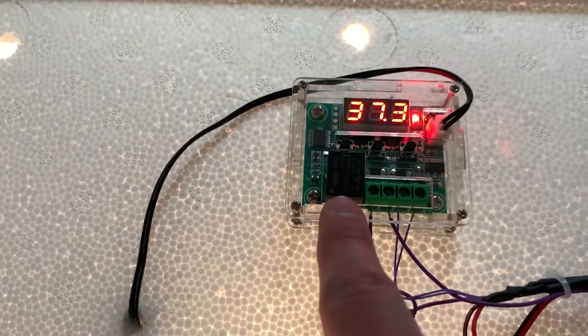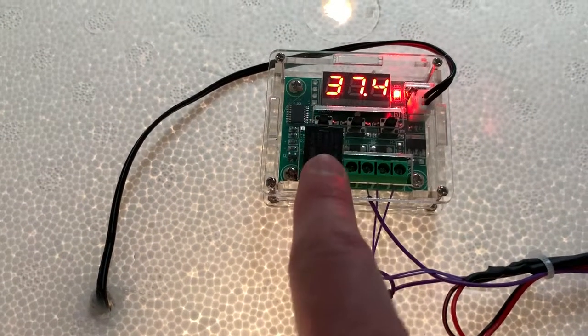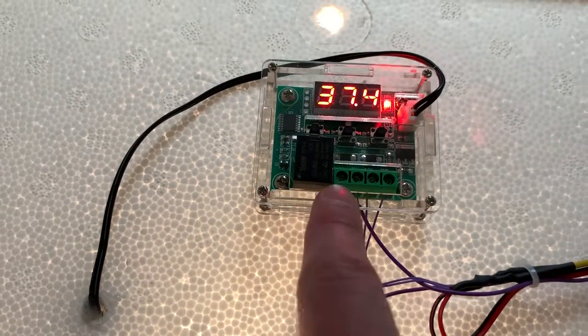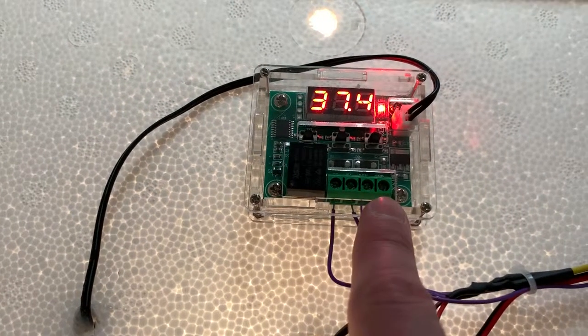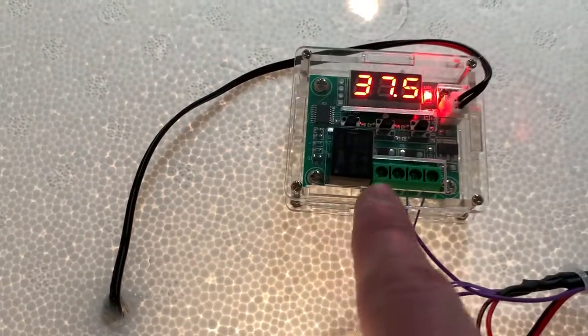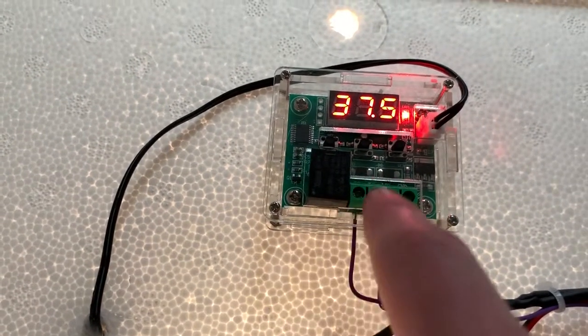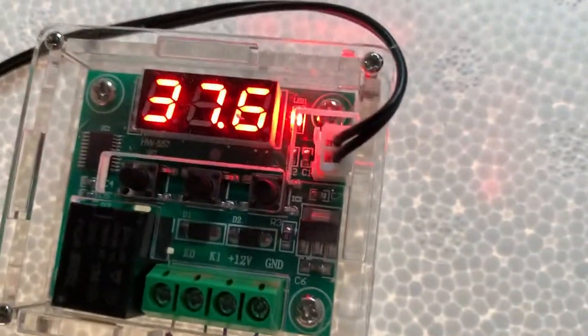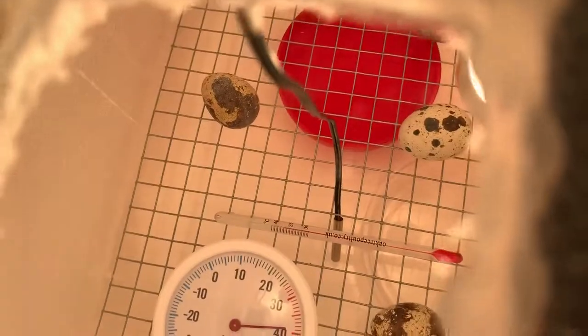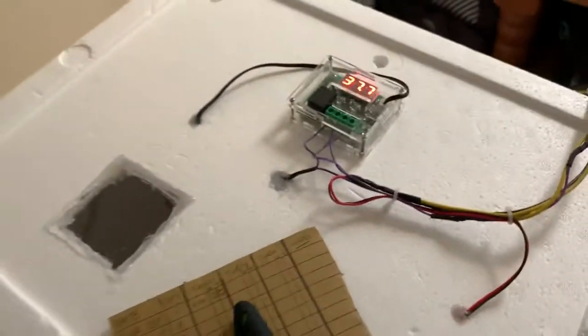The two points here are for whatever this thing is called which basically switches it on and off. This is the power, 12 volts to power the actual thermostat itself. Once this is on that completes the circuit and turns the bulb on. This is the thermocouple probe temperature sensor going in there and that's just suspended down there, just dangling.